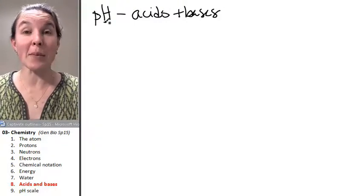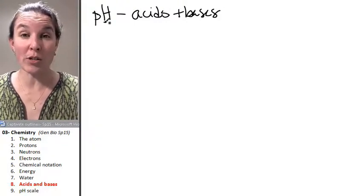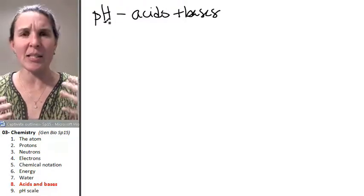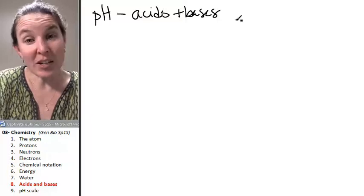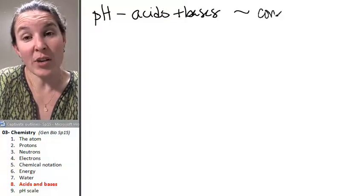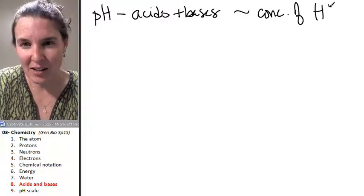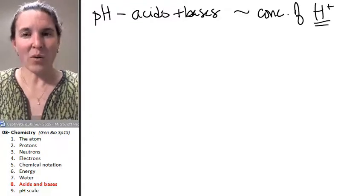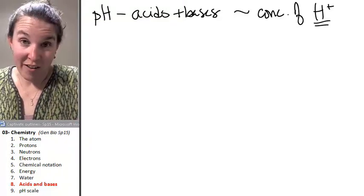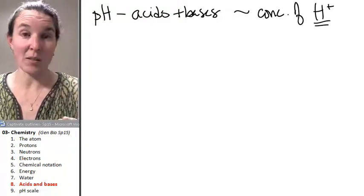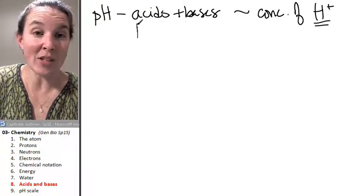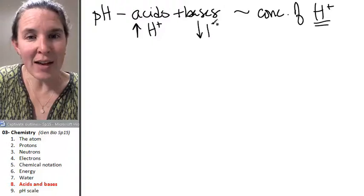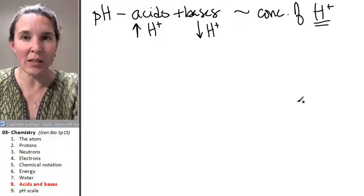Now, pH is an extremely important characteristic or descriptor in a system because it tells you essentially the concentration of hydrogen ions in a system. The more hydrogen ions you have, the more acidic your substance is. So acids have a lot of hydrogen ions, and bases don't have as many hydrogen ions. And this is all relative.